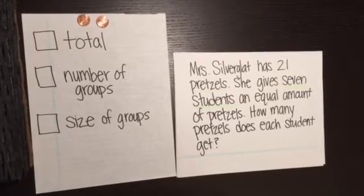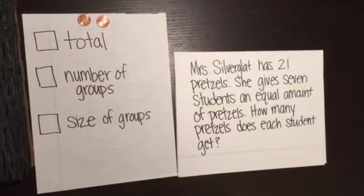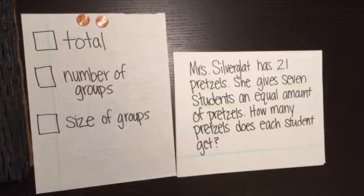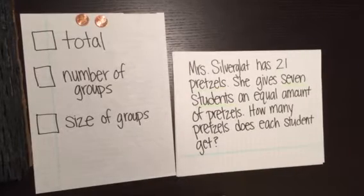Let's read our problem. Mrs. Silvergot has 21 pretzels. She gives seven students an equal amount of pretzels. How many pretzels does each student get?